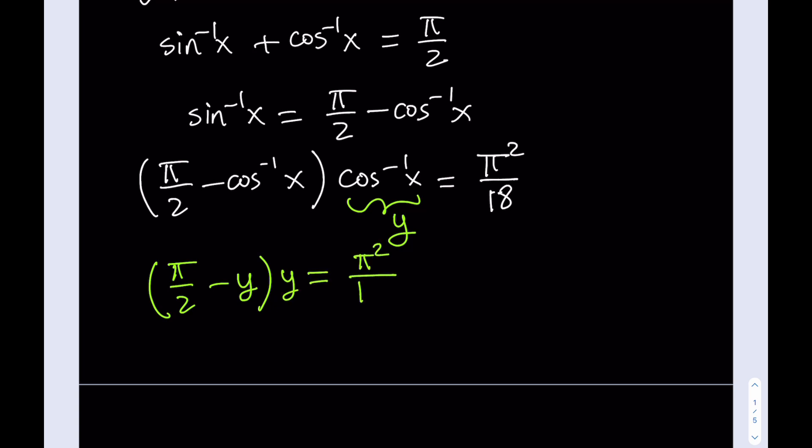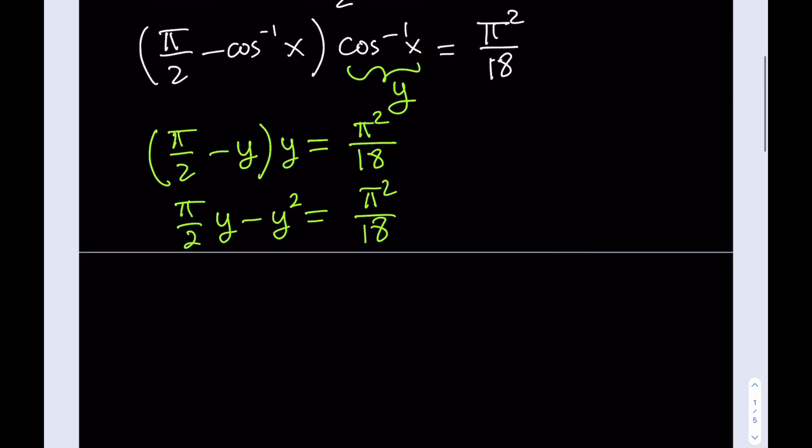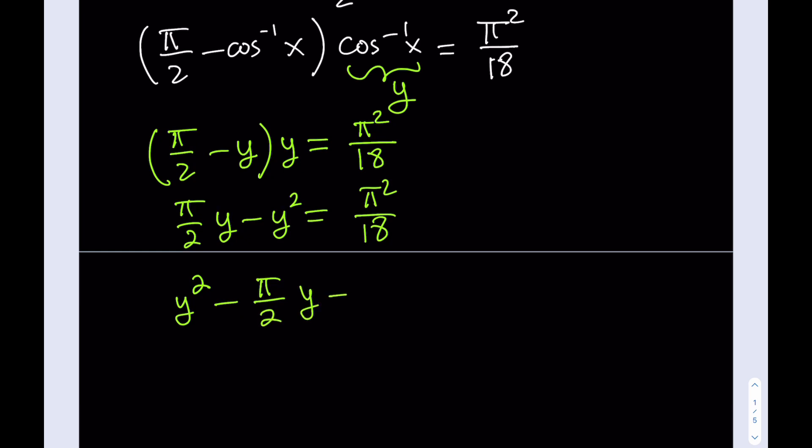If you distribute, you get pi over 2 times y minus y squared is equal to pi squared over 18. Now, you need to remember that pi is a constant. It's a number, just like 5, 2, negative 3, right? So we do get a quadratic equation here. Let's put everything on the right-hand side, which makes the y squared positive, negate the y, and then just add pi squared over 18 and set the whole thing equal to 0.